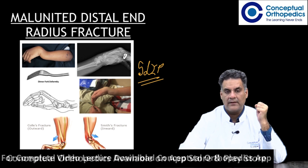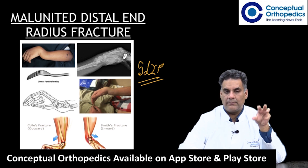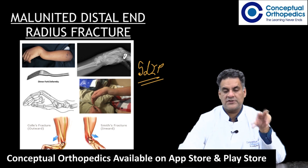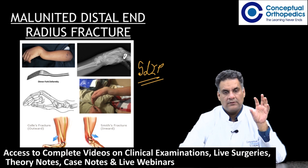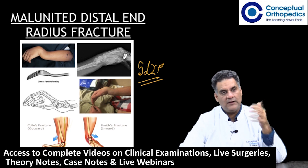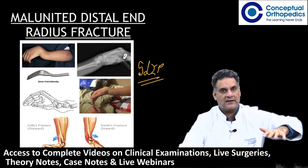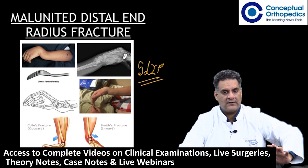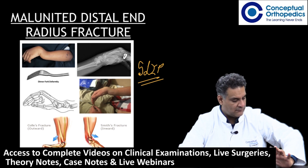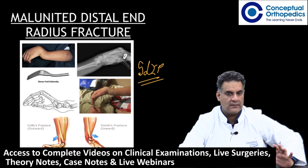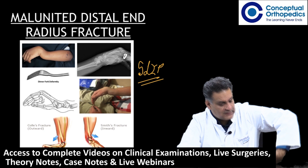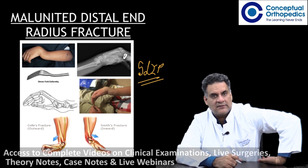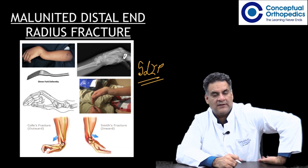When you treat a distal radius fracture — the classical Colles' fracture — you do the opposite: pronation, palmar angulation, and ulnar deviation. A Colles' fracture usually occurs with a fall on a dorsiflexed wrist, and a Smith fracture is the reverse Colles', occurring with a fall on a palmar-flexed wrist.